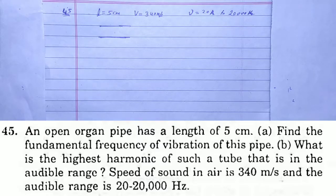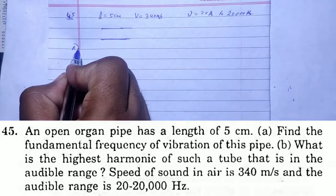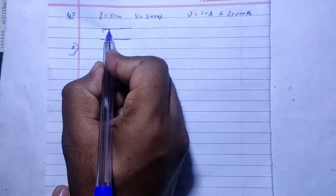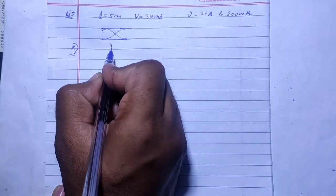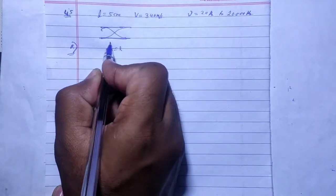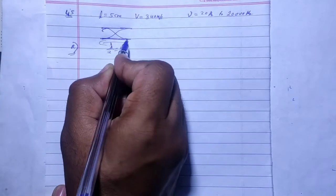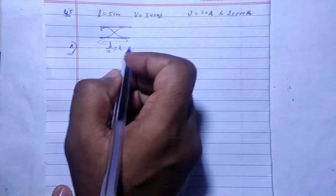For part (a), the fundamental frequency of an open organ pipe. For an open pipe, lambda by 2 equals the length, so lambda equals two times the length, which is 2 times 5 cm equals 10 cm equals 0.1 meters.